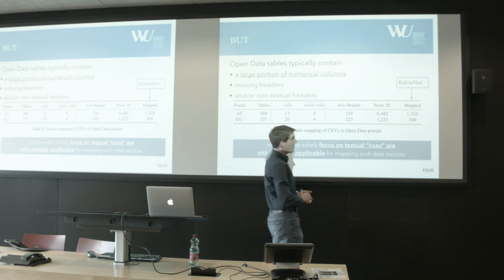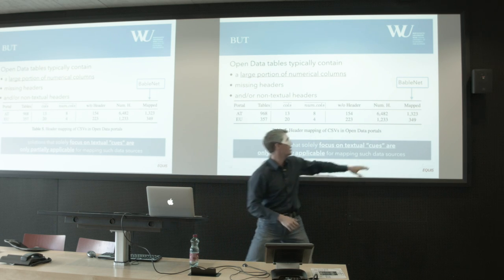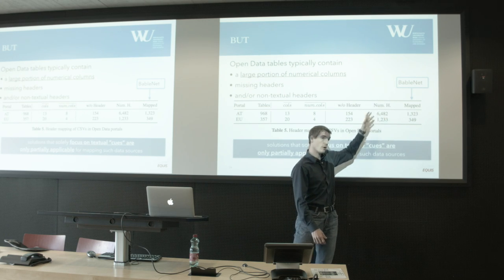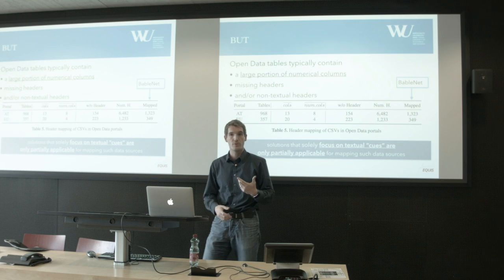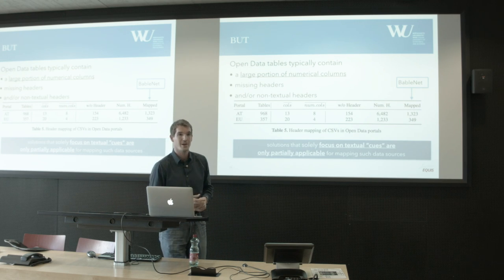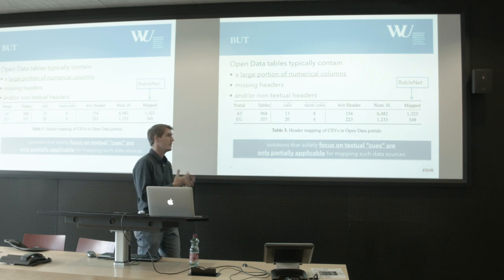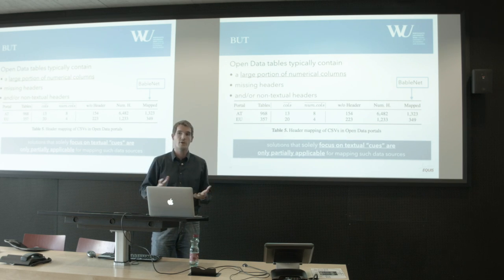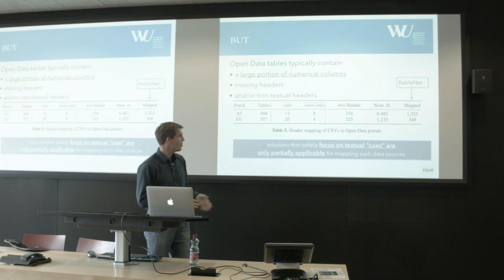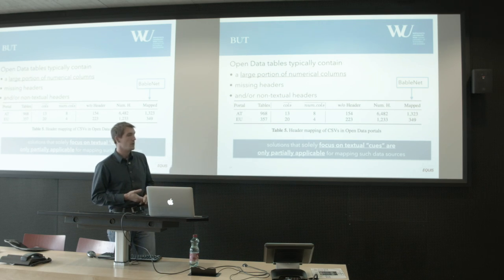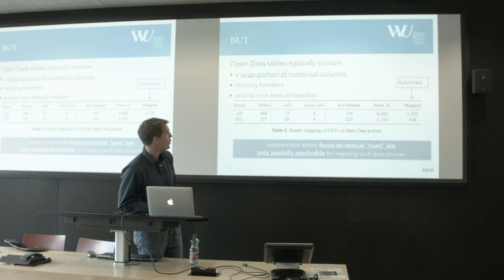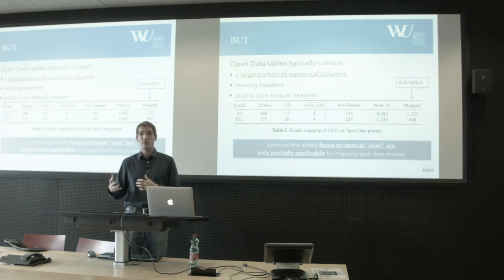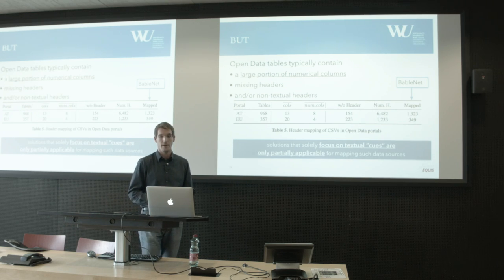From about 6,400 numerical columns with a header, we tried to map the header values to BabelNet to get some concept or entity information, and only roughly 20% returned results. For 80% of the headers we couldn't get any results with BabelNet. The European portal looks roughly similar. So labeling and converting tabular CSV data needs more approaches than only relying on textual clues.